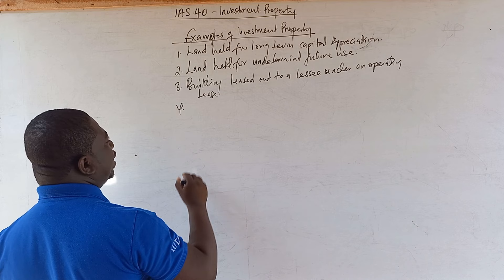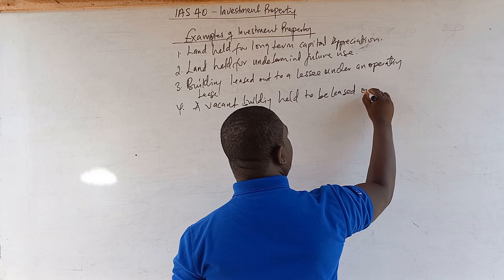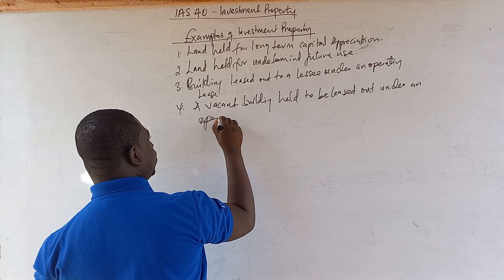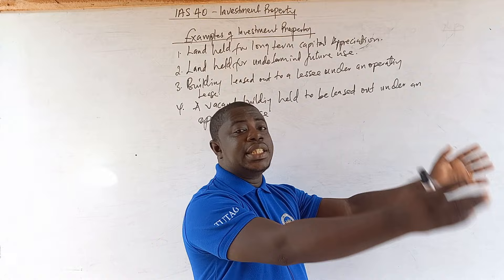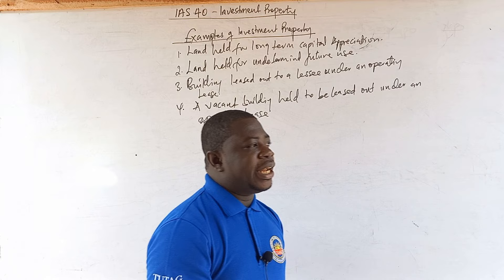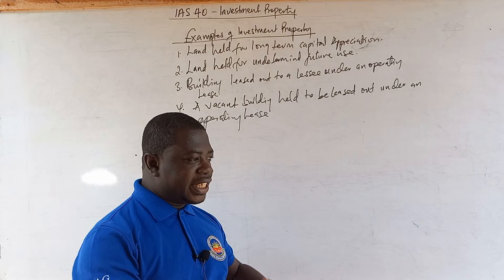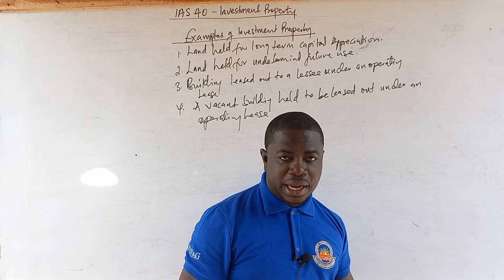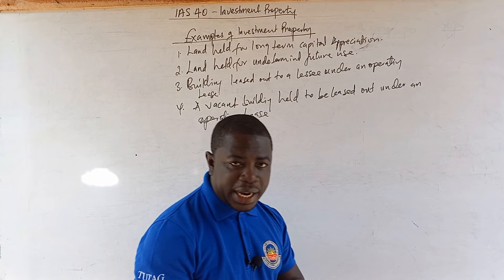The fourth example is a vacant building held to be leased out under an operating lease. The third point covered a building already leased out, but this fourth one covers a building where the intention is to lease it out. Even though it hasn't been leased yet, the moment the intention is to lease it out, it falls under IAS 40 as investment property — not IAS 16. Whether the building is already given out under an operating lease or is yet to be, the intention makes it investment property.